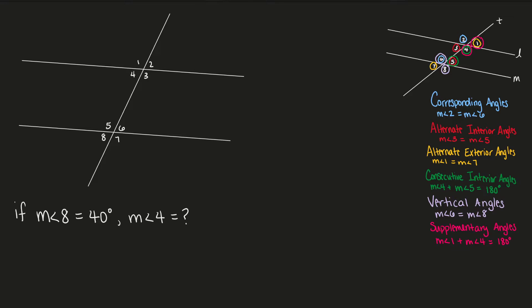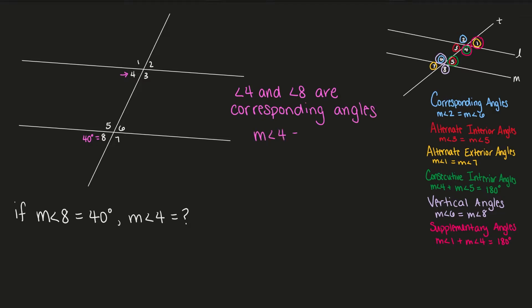If the measure of angle 8 equals 40 degrees, then what's the measure of angle 4? Angle 8 and angle 4 are corresponding angles, and corresponding angles are congruent. So if the measure of angle 8 equals 40 degrees, then the measure of angle 4 is also 40 degrees.